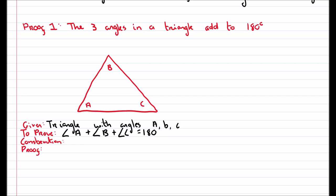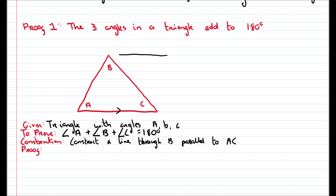What do we want to prove? You'll write down that angle A plus angle B plus angle C equals 180 degrees. For the construction, we're going to draw a line through B parallel to AC. So it's parallel to this line. And there's our line through B, that's parallel.